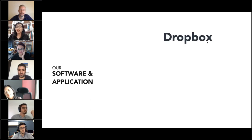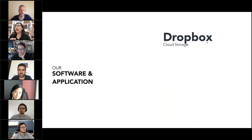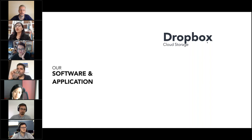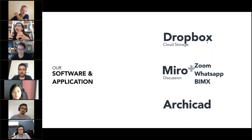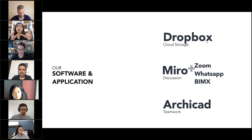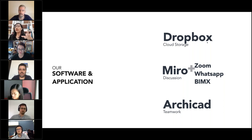For the software part, because we are all in different countries, we need to find software that can support our work. First thing we need is cloud storage — we use Dropbox to store our files so we can access them from everywhere. Second thing we need is for discussion, which we do every day: we use Zoom, WhatsApp, BIMx, and Miro. And the next very important one is ArchiCAD, which replaces the traditional way of doing 2D and then 3D, which led to lots of miscommunication and discrepancy. ArchiCAD helps us a lot on teamwork.